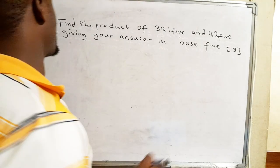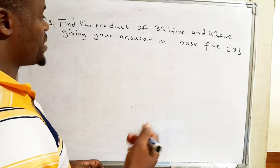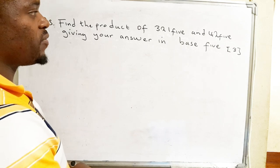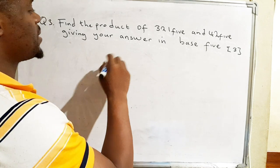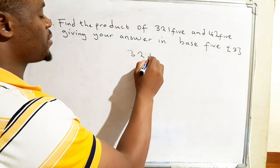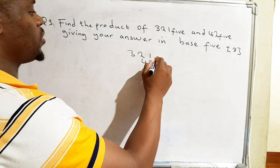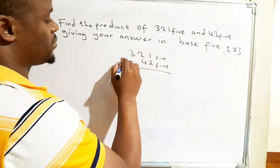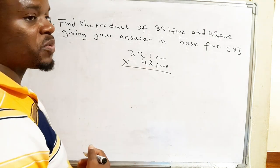So this is a question on number basis. Find the product of 321 base 5 and 425, giving your answer in base five. So we have 321 and we have 425, all these are in base five. We can either start with this one or start with that one, it's the same.